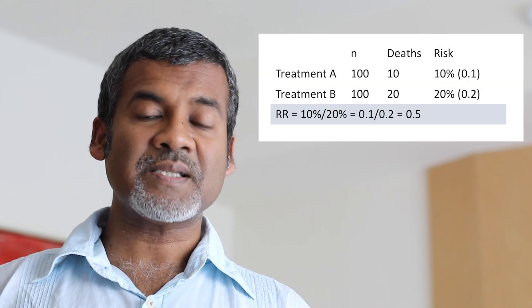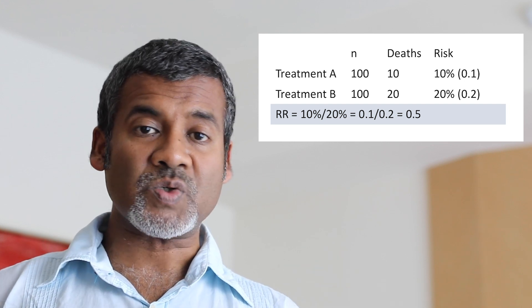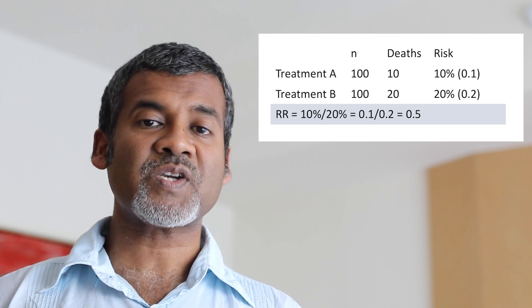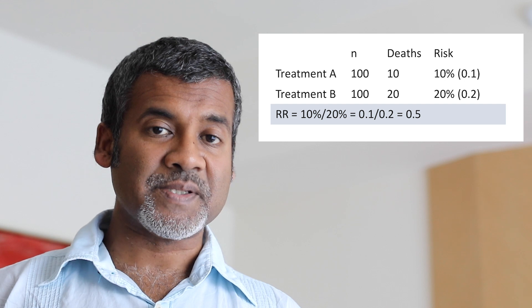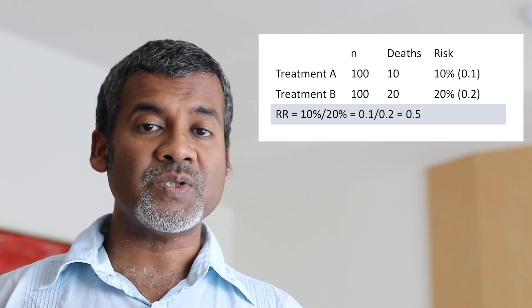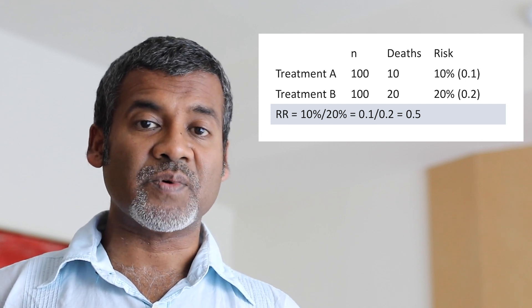So what is relative risk or risk ratio? The concept is straightforward — it's the risk of death in one group compared to the risk of death in the other group, so you simply divide one by the other. The risk of death in treatment group A is 10%; in the control group it is 20% or 0.2. When you divide 0.1 by 0.2 you get 0.5 — that is the relative risk or risk ratio. A relative risk of 0.5 means there is half the risk of dying in the new treatment group compared with the control group.